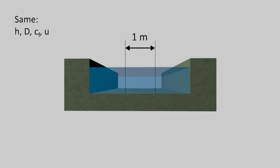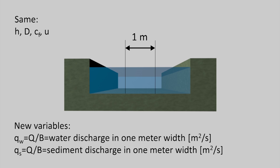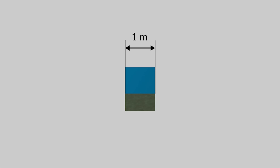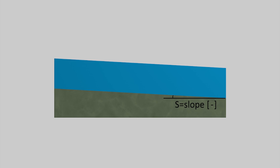Let's focus on a 1-meter-wide part of the cross section. Note that the depth, mean grain size, friction coefficient, and velocity are considered the same as in the entire section. We now define the discharge of water and sediment over this 1-meter width. The water discharge over 1 meter width is equal to the product of flow velocity and flow depth.